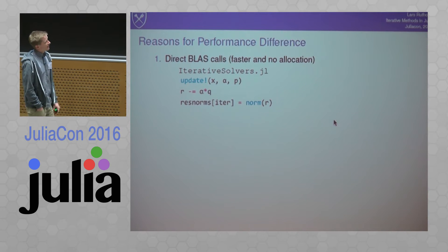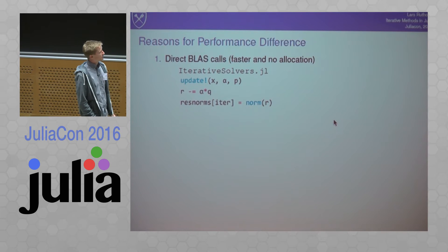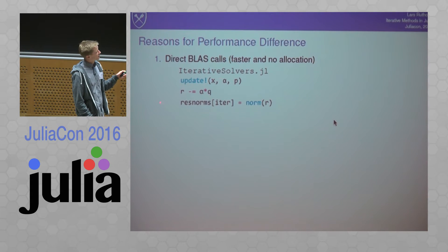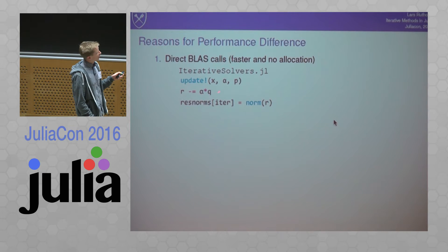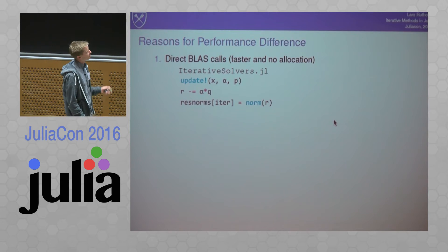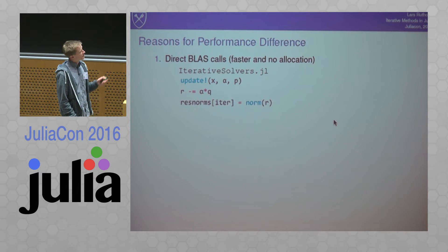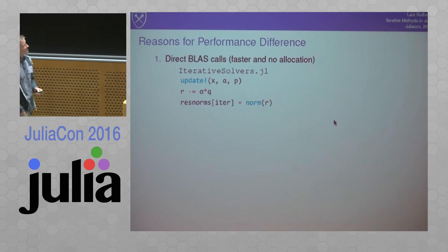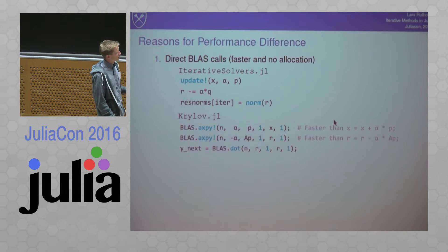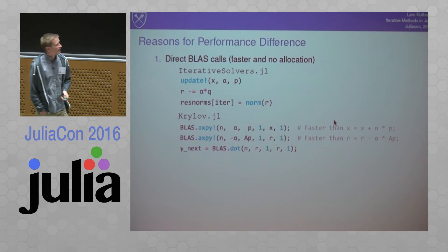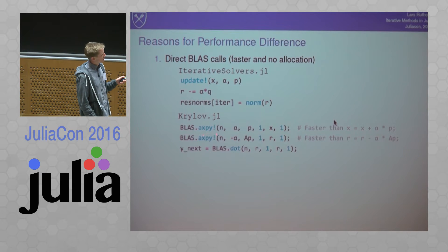To explain what I think accounts for the difference: here is a snippet from the main iteration loop in IterativeSolvers. You have computed a search direction alpha, you update x — so x becomes x plus alpha times p — you update the residual by subtracting what you added to x, and you compute the new residual norm. It's beautiful code, three lines. If you look at Krylov.jl, which is at least a factor of 1.5 faster than IterativeSolvers, you have direct access to BLAS routines here to update x and also to update the residual.